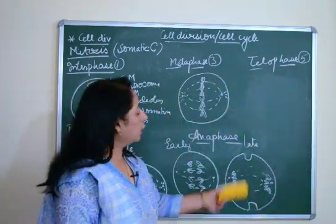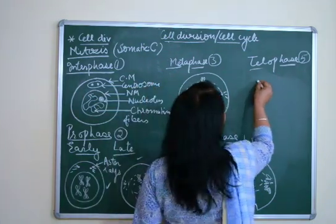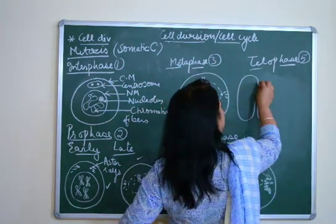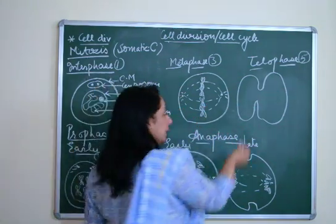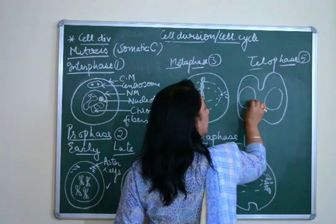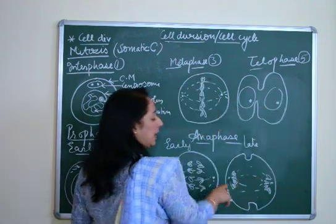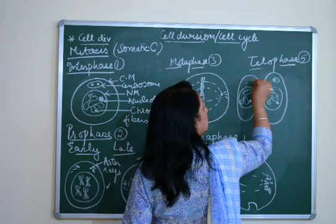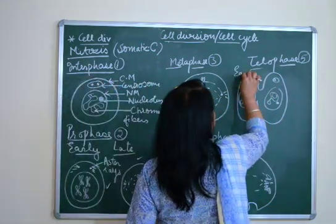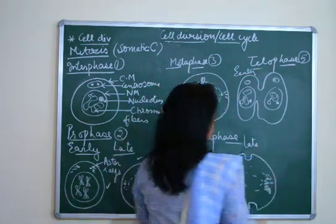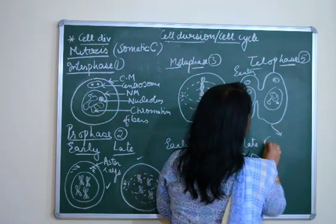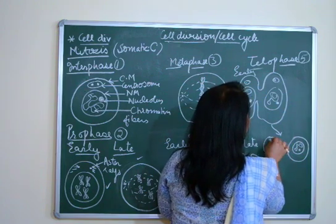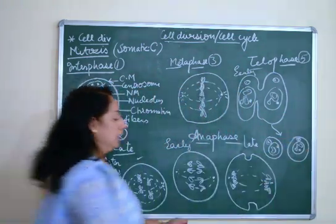In telophase, the furrow deepens and the sub-structures regain their original shape. The nuclear membrane is reformed, the nucleolus is reformed, the chromatins condense back to form chromatin material, and the centrioles — one going to each cell — reform the centrosome. This is early telophase.